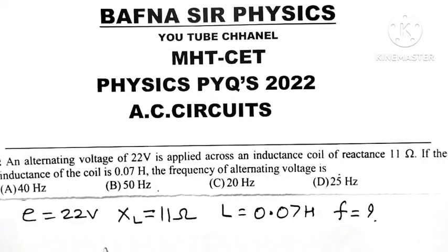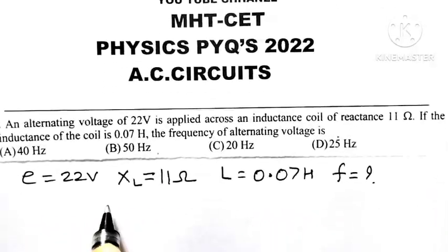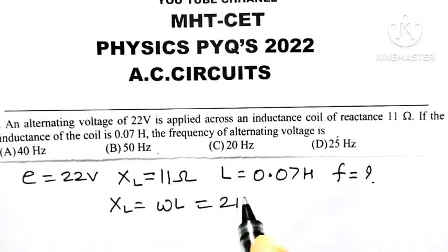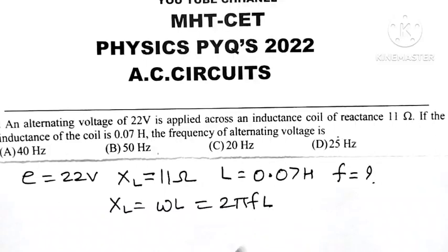We know the inductive reactance XL is equal to ω times L, where ω equals 2πf. So XL equals 2πfL. We want to find out frequency f.